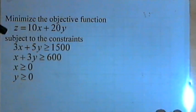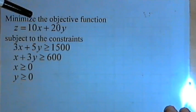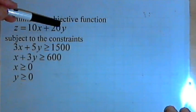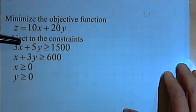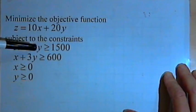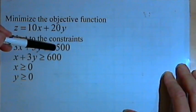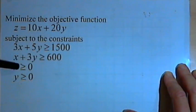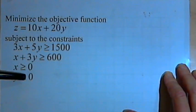The problem says minimize the objective function z equals 10x plus 20y subject to the constraints 3x plus 5y is greater than or equal to 1500, x plus 3y is greater than or equal to 600, and x is greater than or equal to 0, and y is greater than or equal to 0.